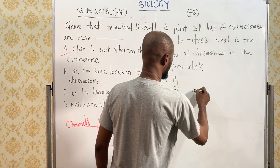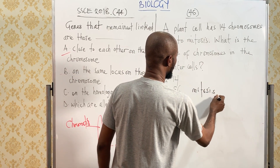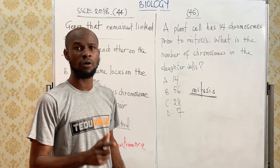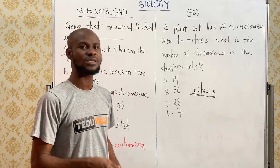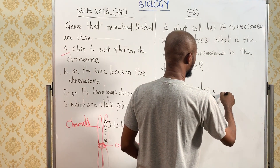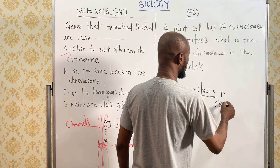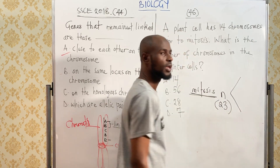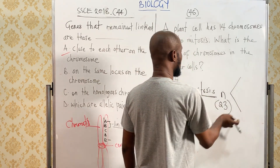Don't forget that in biology, mitosis is simply defined as the type of cell division in which the parent gives rise to offspring that has the same number of chromosomes as the parent. For example, if the parent has N chromosomes — say N is 23 — it's going to give rise to two daughter cells that have the same number of chromosomes as the parent.